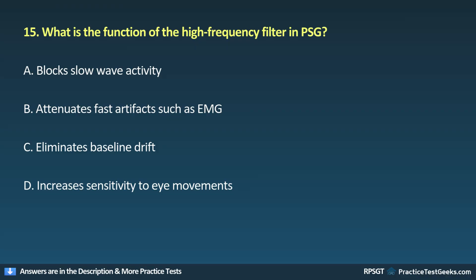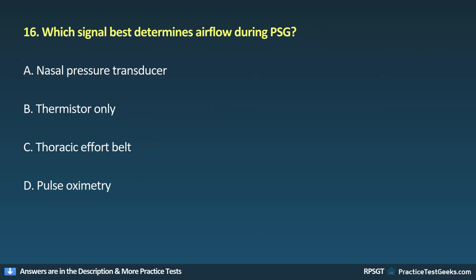Question 15: What is the function of the high-frequency filter in PSG? A. Blocks slow-wave activity, B. Attenuates fast artifacts such as EMG, C. Eliminates baseline drift, D. Increases sensitivity to eye movements.